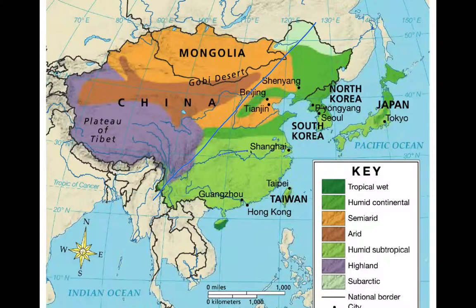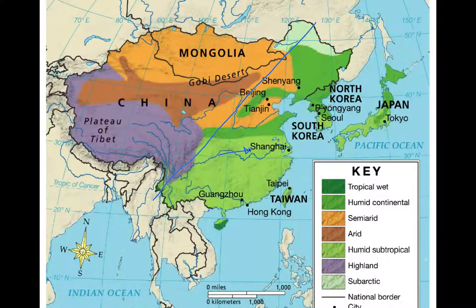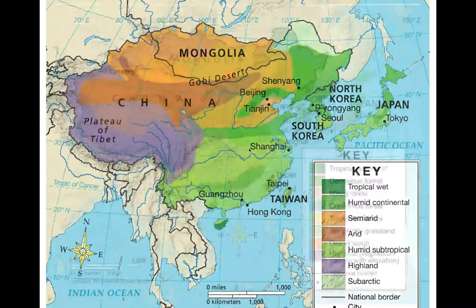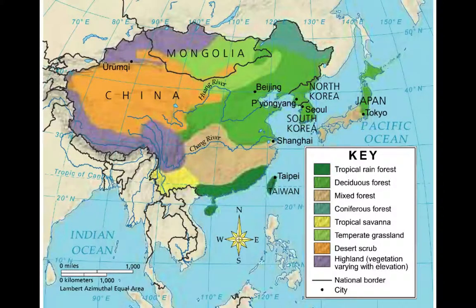We know that the majority of the population in East Asia lies in this region here, going towards the ocean. Keep that in mind when you think of population density, activity, physical features, and climate. When we look at the vegetation zones, a lot of it has to do with where the people live.